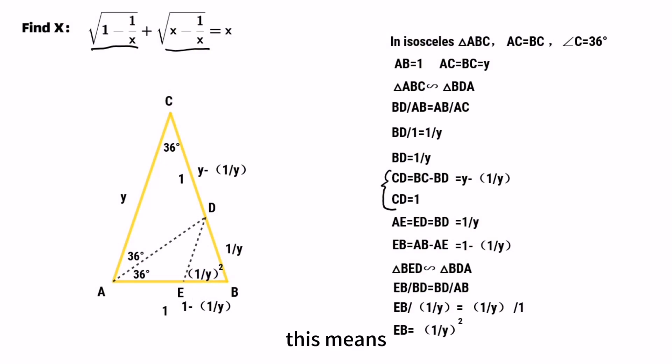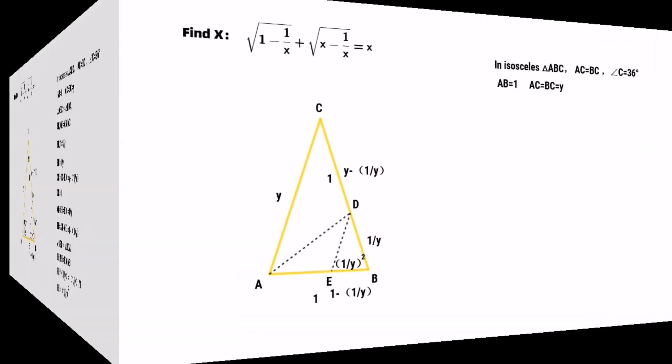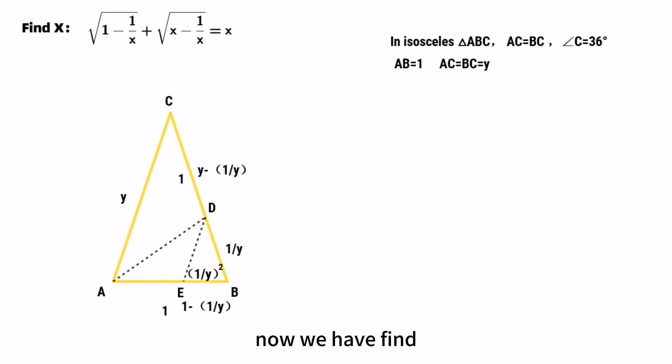That means EB and CD have two different values, so we can get the square root of them. Now we have found the values of our segments in triangle ABC. EB and CD have two representations, so let's check these two values.